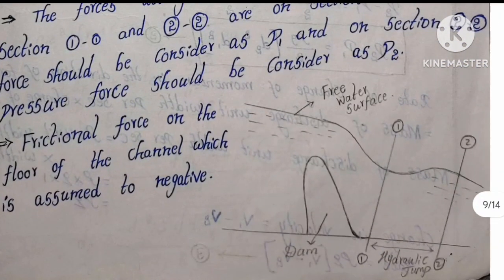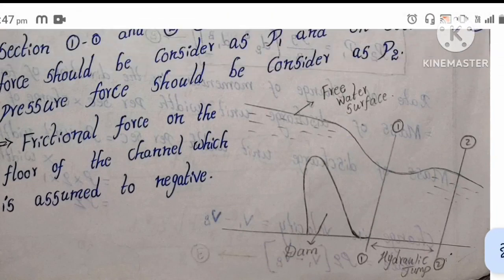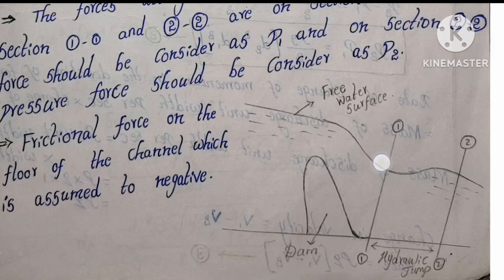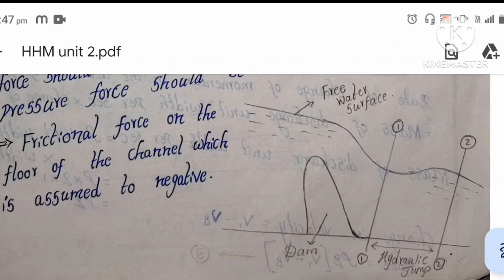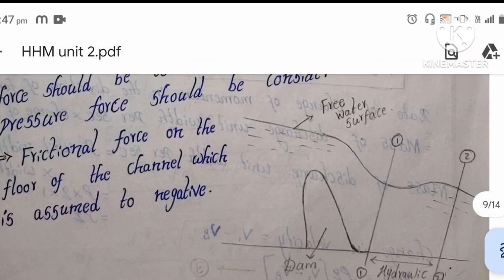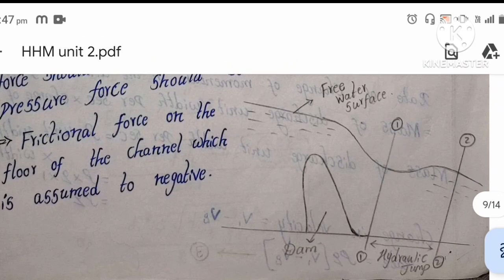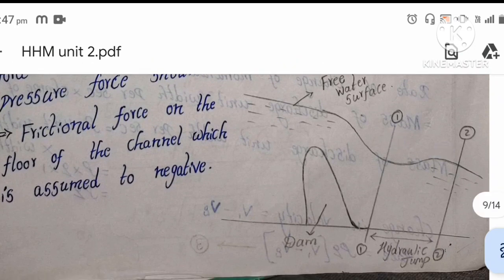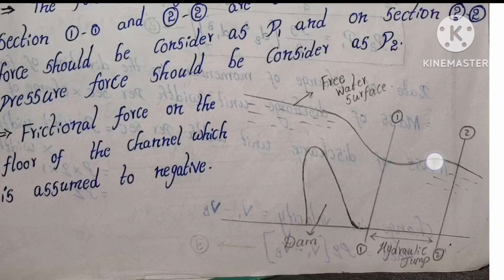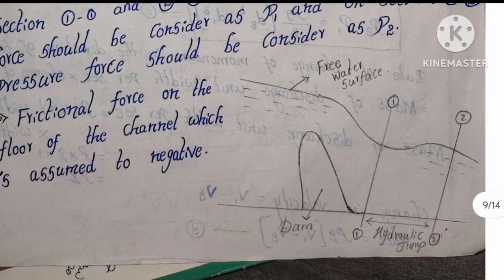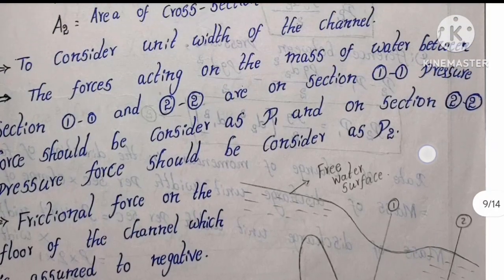This is the maximum velocity. When we get an obstruction, the water flow will go down. Next, the water raises — one free surface. The region between section 1-1 and section 2-2 is called the hydraulic jump.